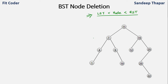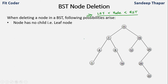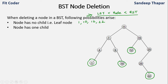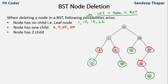A node can be of three types. Either the node has no child, so it is a leaf node. For example, in this tree the leaf nodes are 1, 10, 12, and 22. The second scenario is that the node has only one child — these can be 4, 9, 25, and 20. And the third scenario is that the node has two children — these are 11, 7, and 15. So all nodes of the tree can be categorized into these three parts: no child, one child, or two children.